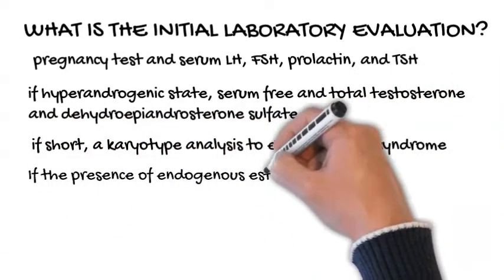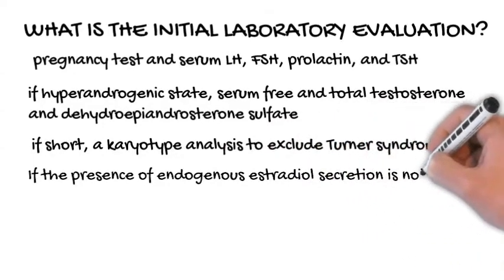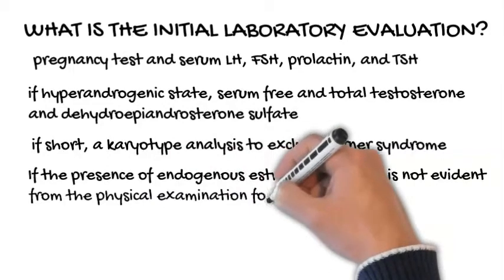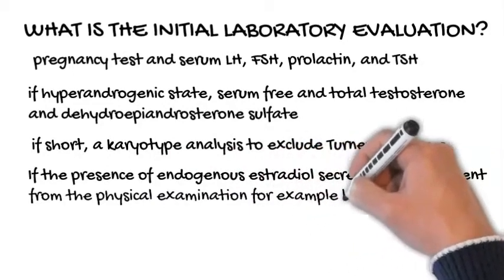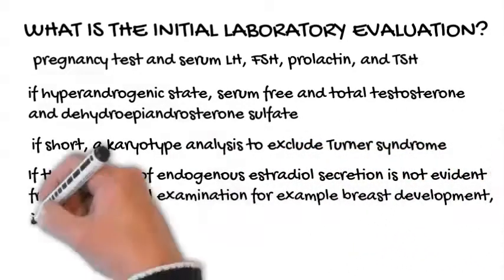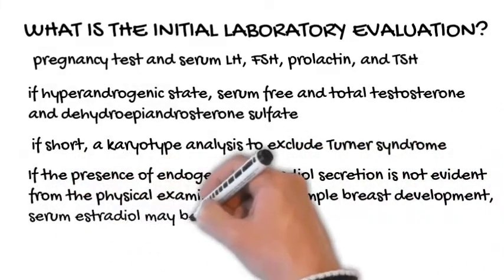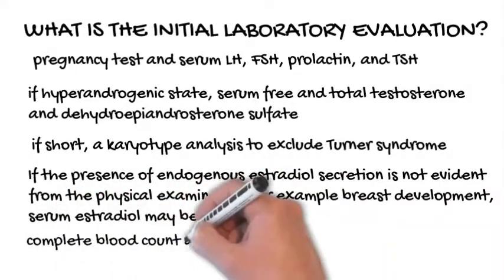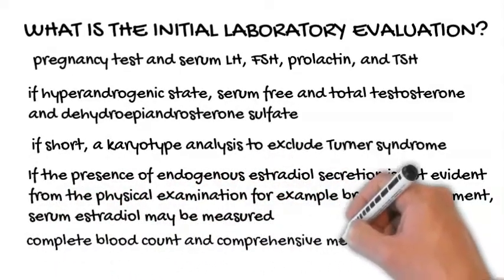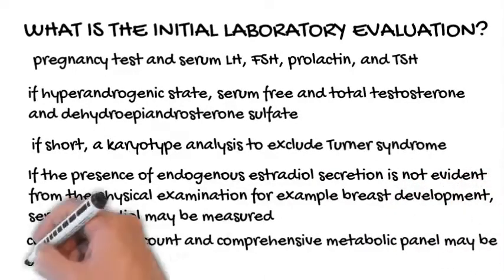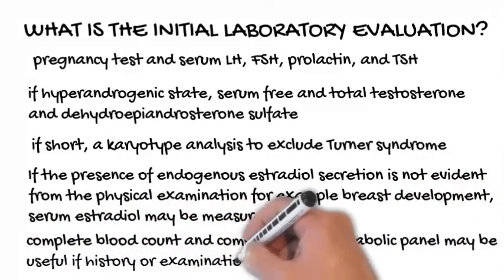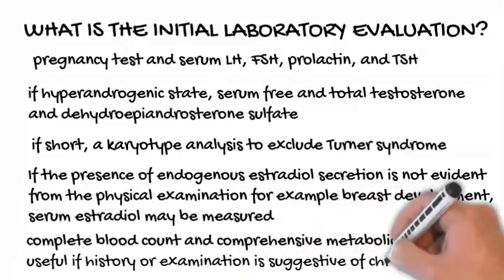If the patient is short in stature, a karyotype analysis should be performed to exclude Turner syndrome. If the presence of endogenous estradiol secretion is not evident from the physical examination, e.g. breast development, serum estradiol may be measured. A complete blood count and comprehensive metabolic panel may be useful if history or examination is suggestive of chronic disease.